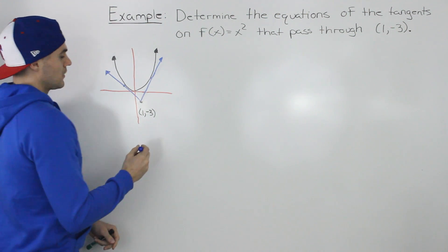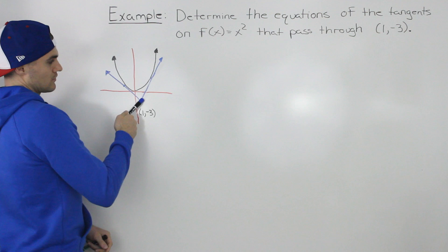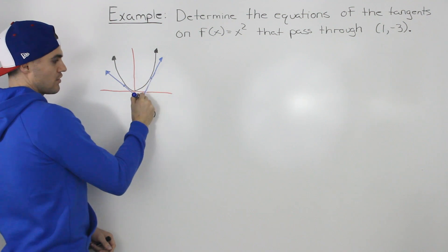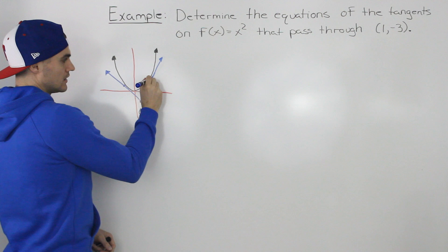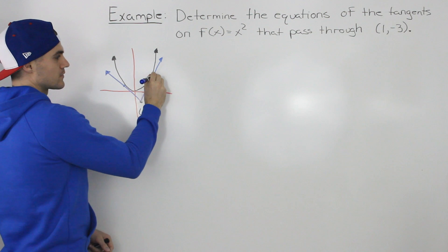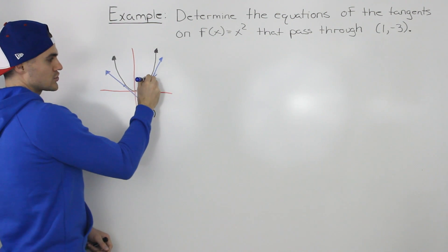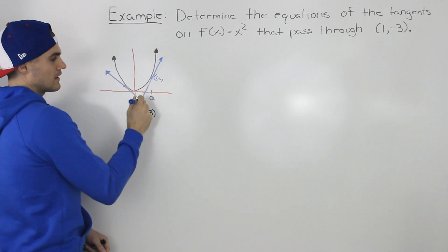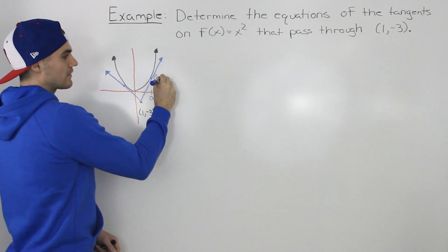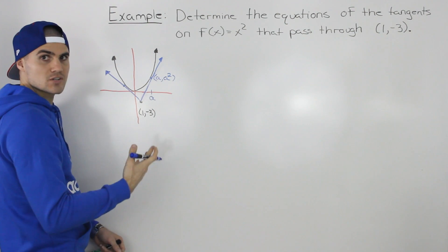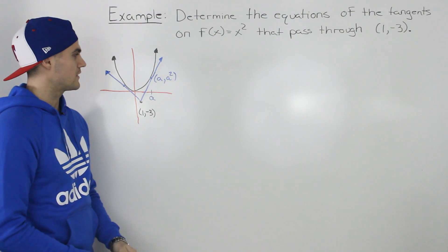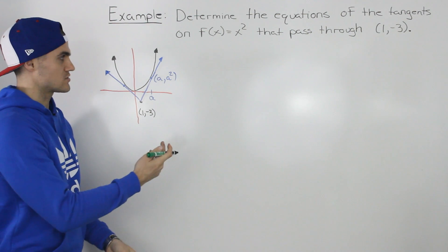The first thing we want to do is work with this blue tangent line here and find the point on the function where this tangent is hitting. Let's say that this point has an x value of a. So the tangent touches the function at a coordinate with x-value a. Now if the x value is a, because this function is x squared, we know the y value is going to be a squared. So now that we have a line with two different points, let's find the slope of that line using rise over run.